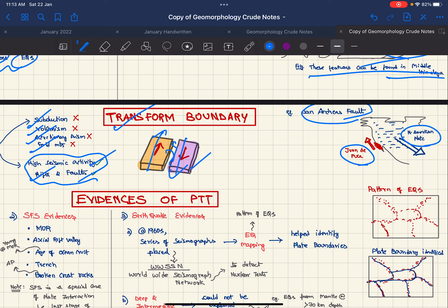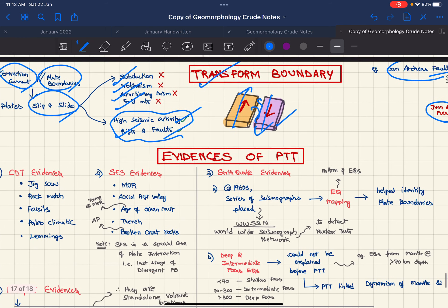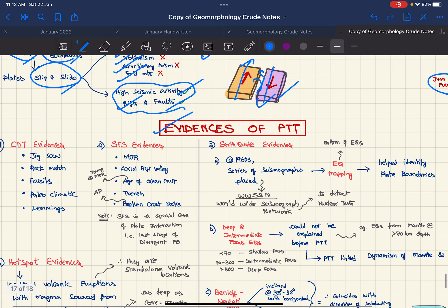Coming to evidences of plate tectonics theory, we have CDT evidences given by Wegener which are jigsaw fit, surface rocks match, fossils, and paleoclimatic evidence including coal fields and glacial evidences.